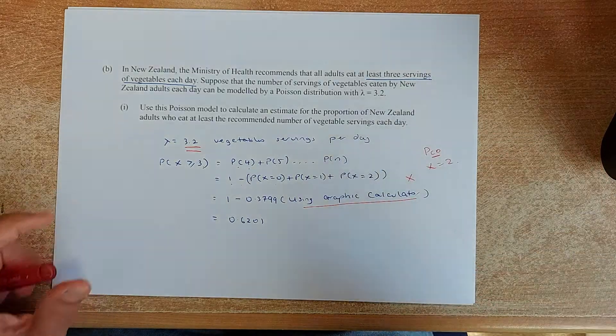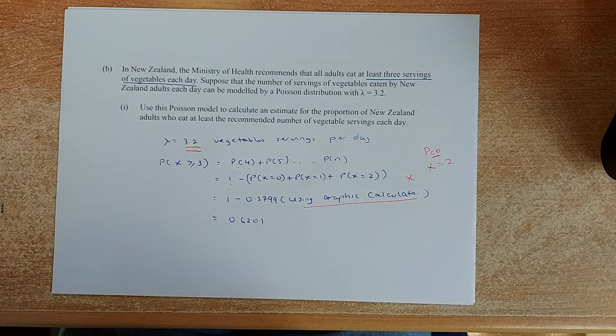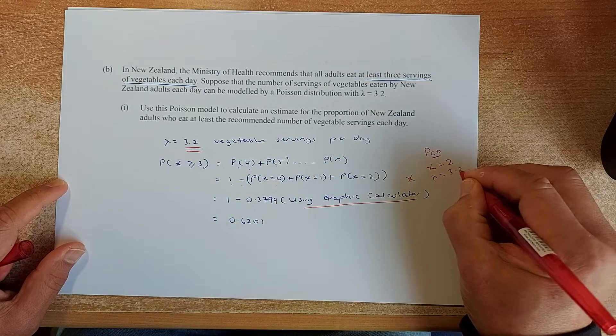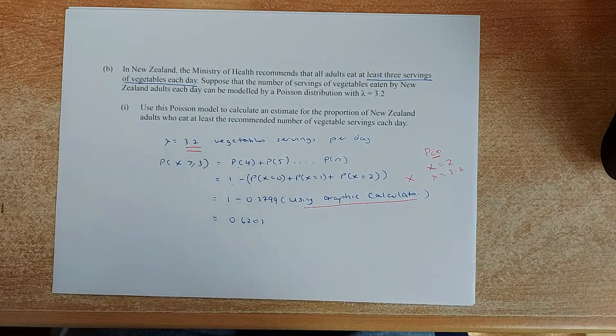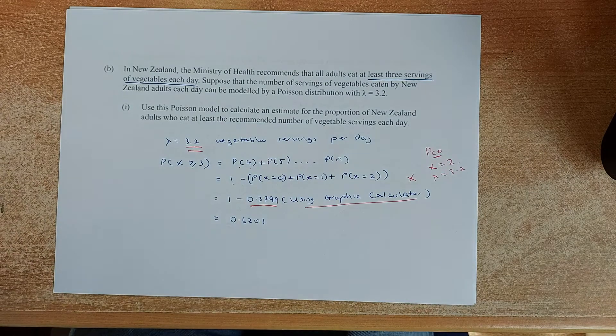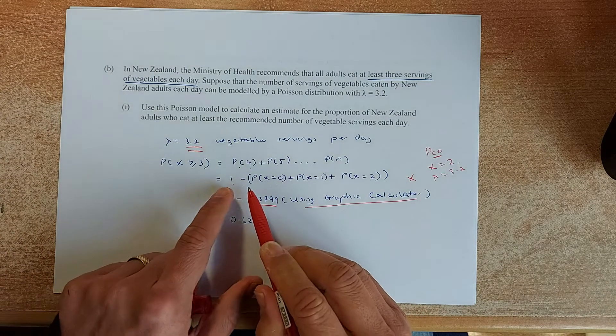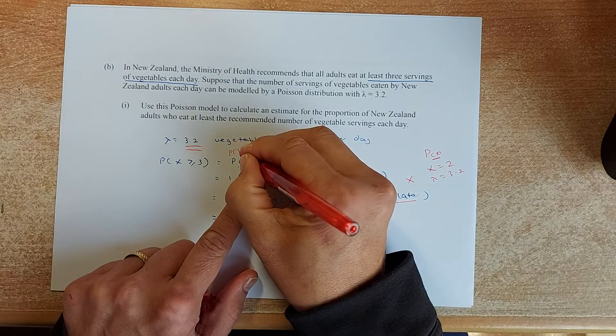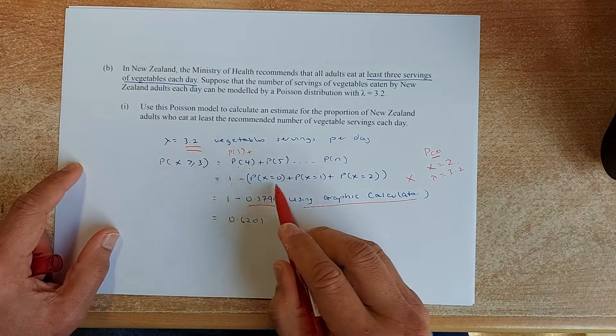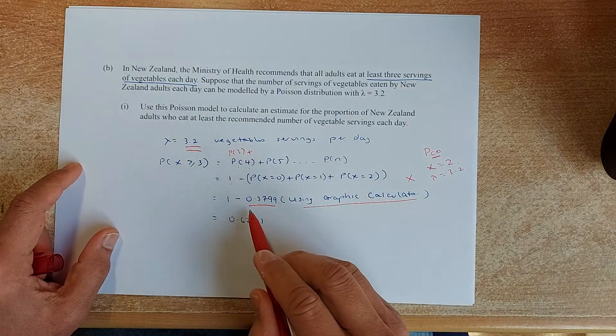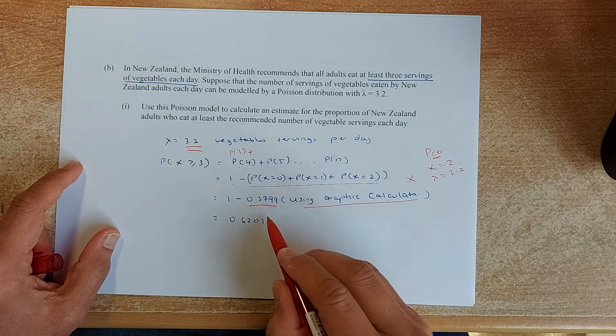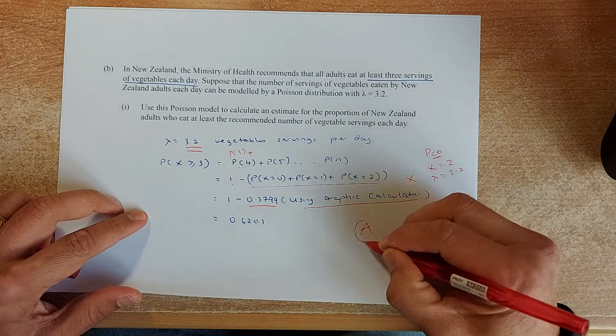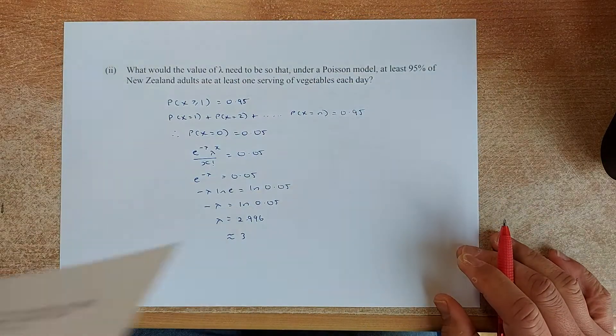Then put in your calculator, your graphic calculator. And you should get, put your x to the 2 and your lambda is 3.2. Put under PCD and you should get the answer 0.3799. Because you want 1 minus this number gives you 3 or more. So 3 or more will be 3 plus 4, 5, 6. So 1 minus 0 to 2 will give you the answer. So put in your calculator. This answer is going to be 0.3799. So the answer is 0.6201. And that is achieved. Now we go to the next one.